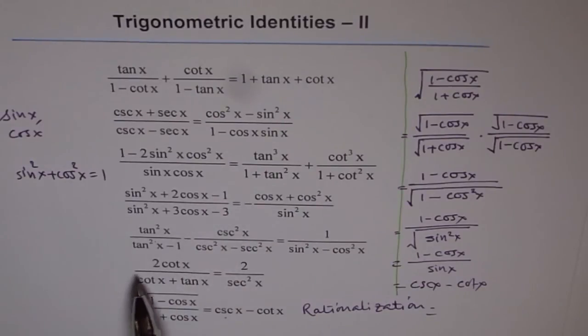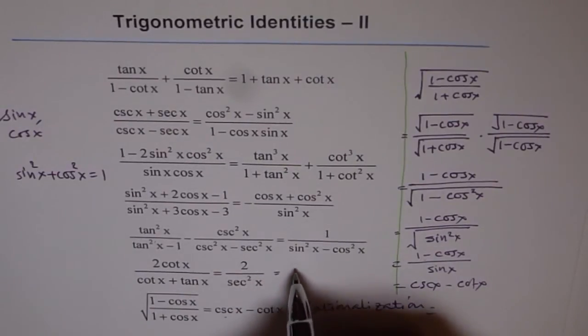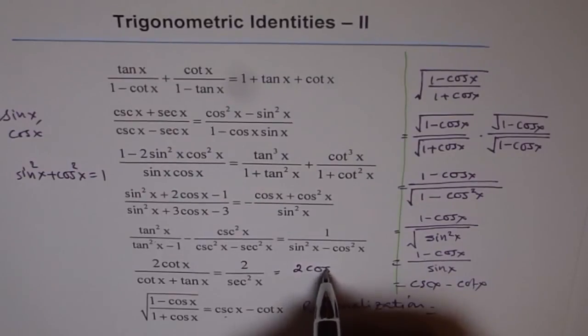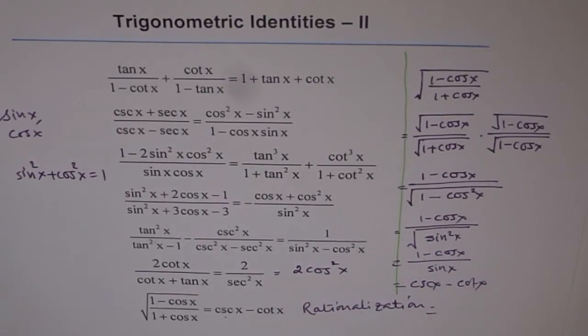So, here also, just convert them into sine and cosine, and see if you get that. You don't have to start from both the sides. You start from here, and then you can reach that place. 2 over secant square x is like 2 cos square x. Think like this. 2 over secant square x, basically, is 2 cos square x. So, if you convert this into sine and cosine, you should get that very easily.